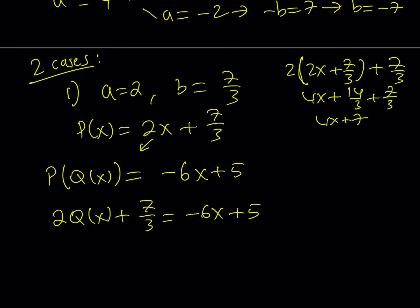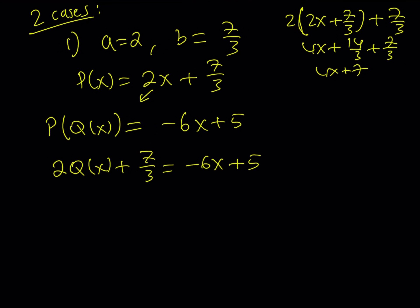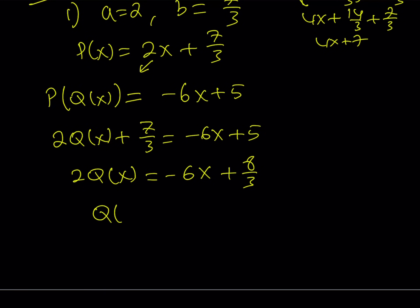Obviously there's more than one way to do it. You could also assume that Q of X must be a linear polynomial as well and suppose we call it MX plus N, substitute, solve for M and N. I just wanted to do it this way because it's kind of cooler. So you can solve for Q of X isolated. Subtract 7 thirds, 15 minus 7 is 8, so it's going to be negative 6X plus 8 thirds, and then you can just divide everything by 2 here to find Q of X, and that is going to be negative 3X plus 4 thirds.